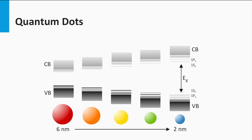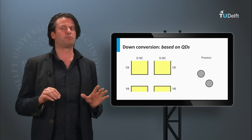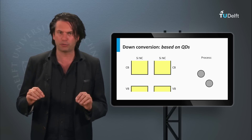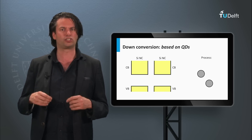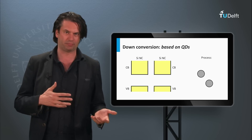The smaller the particles, the larger the bandgap. This enables interesting bandgap engineering possibilities, such as a multi-junction solar cell based on junctions with different quantum dot sizes in every junction. To use quantum dots for down-conversion or multiple exciton generation, an ensemble of nanoparticles is embedded in a host material.